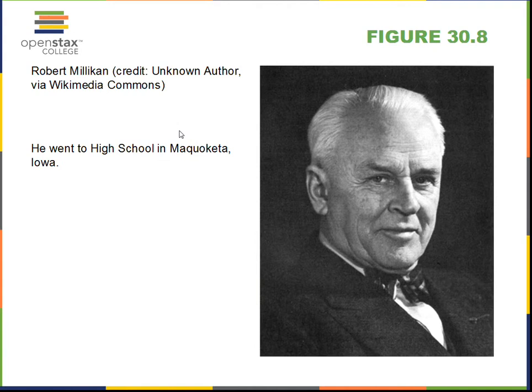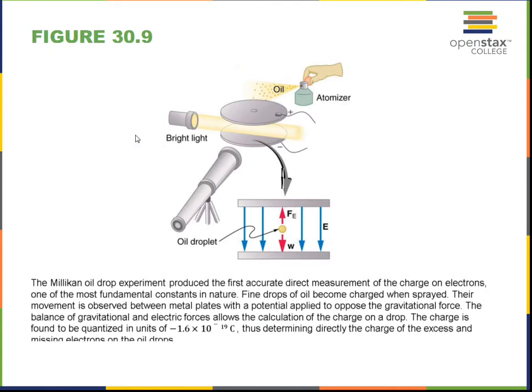Then Millikan. Millikan was a good experimental physicist and grew up in different towns but did go to high school in Maquoketa, Iowa, my wife's hometown. They had a billboard outside of the town, Robert Millikan went to high school here. Millikan did an experiment to determine the charge on the electron. Spraying oil drops, they pick up random amount of extra electrons or deficiency of electrons, put them in an electric field to counterbalance the weight they have due to gravity. By taking very long time measurements, he could come up with the charge of the electron.